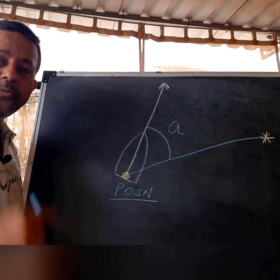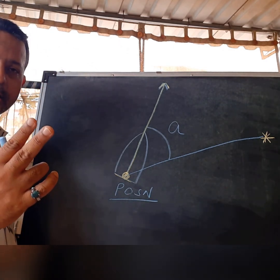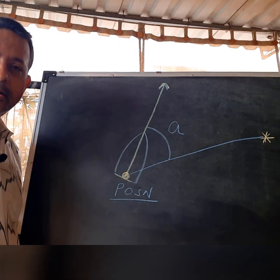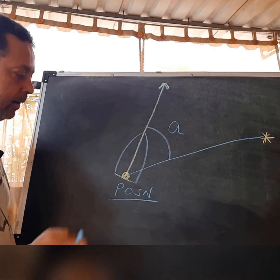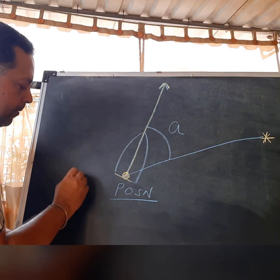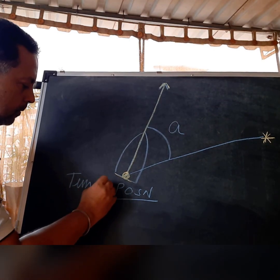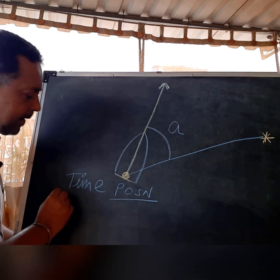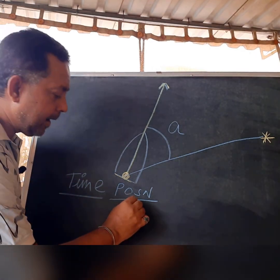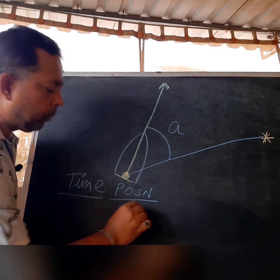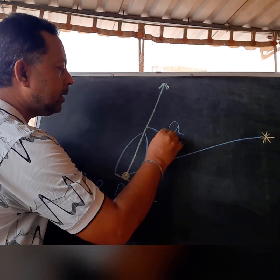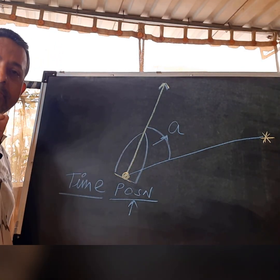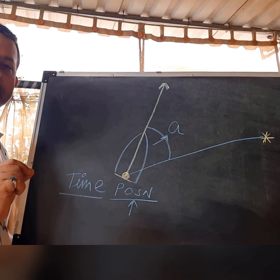So you have two kinds of data: one is position and one is an angle. But you need another piece of data, and that is called time. At exactly what time and at exactly what position you have measured this angle — that is very important. Time is very important.